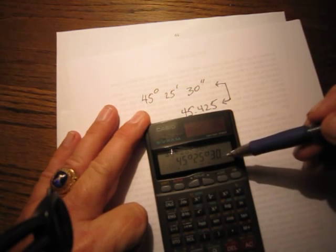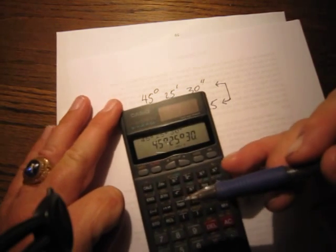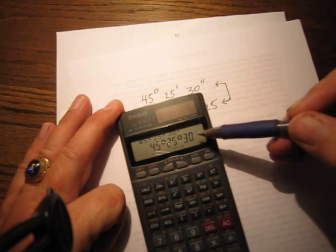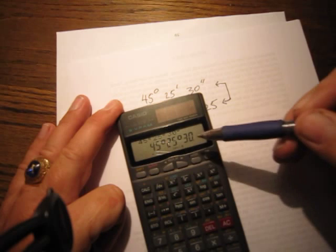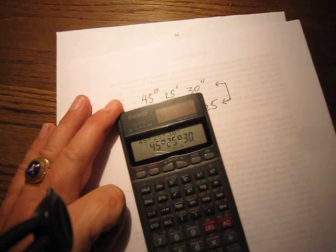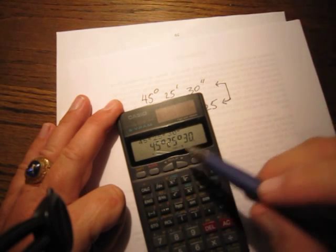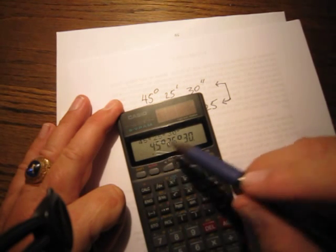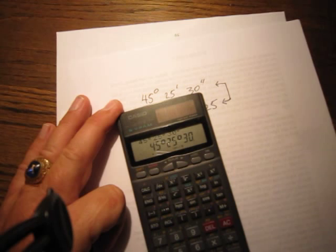In other words, it's not going to give you a minute and a seconds emblem. They're all just the little tiny circles that mean degrees. So when you look at that, you've got to get it in your head. That's 45 degrees, 25 minutes, and 30 seconds. So that worked out real well. We can hit equals, and there it is.